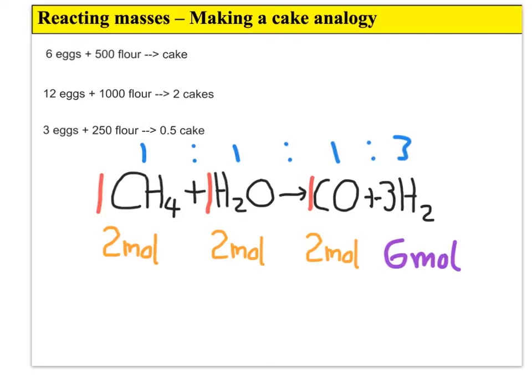Generally in the questions you'll be dealing with, you'll be using decimals. Let's try a question with the same equation with decimals. Imagine we start off with half a mole, so 0.5 moles of methane. How much water do we need? Well, as the ratio is one to one, we're going to need the same amount - 0.5 moles of water. How much carbon dioxide will be produced? Again, it's going to be the same, it's a one to one ratio.